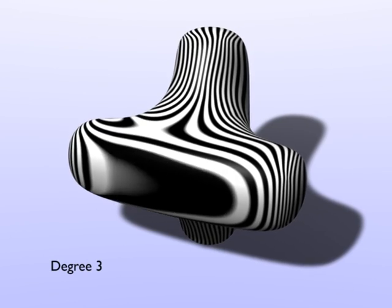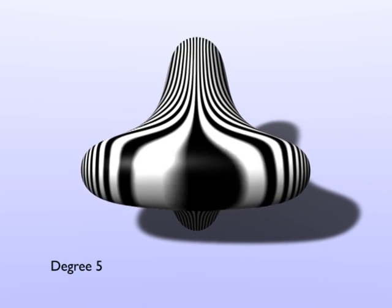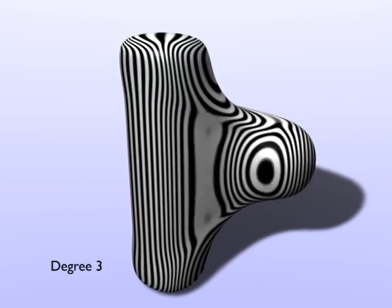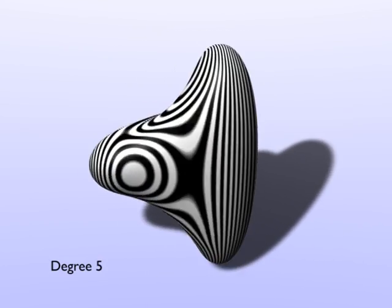Using reflection lines, it's clear that increasing the degree creates a smoother surface. This non-uniform surface becomes smoother in exactly the same way.